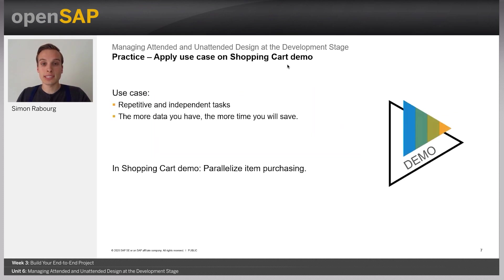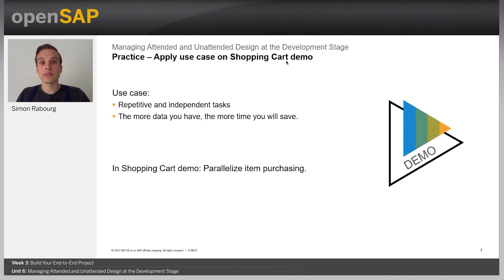So now let's talk about the demo. The Trigger as a New Job feature is really useful for a specific use case: when you have redundant, repetitive tasks that are independent and you want to parallelize them. This will let you gain some time, and the more data you have, the more time you will save. In the context of the shopping cart demo, we already know that we designed a sub automation that lets you order just one item. We are going to put the Trigger as a New Job option at that level so that we will parallelize all the item purchasing.